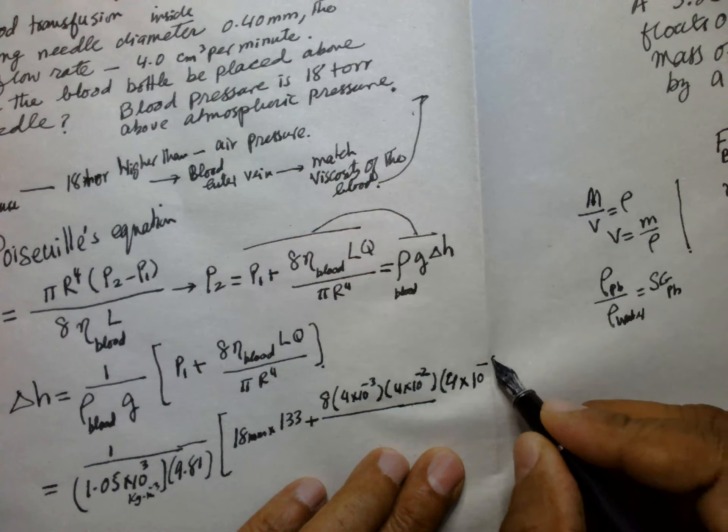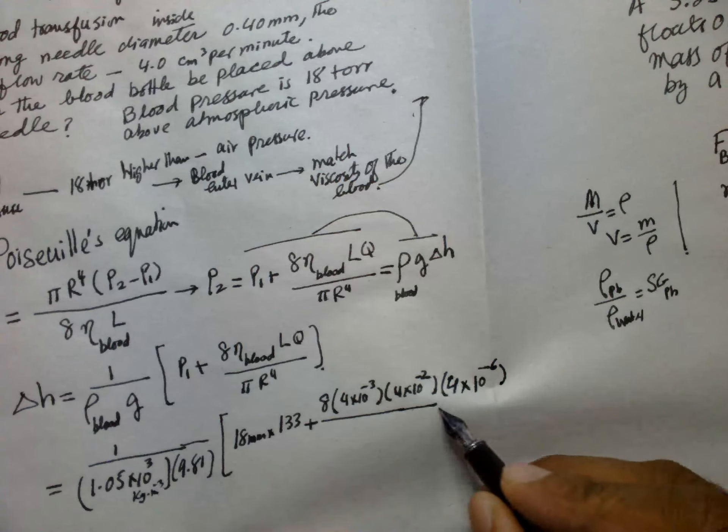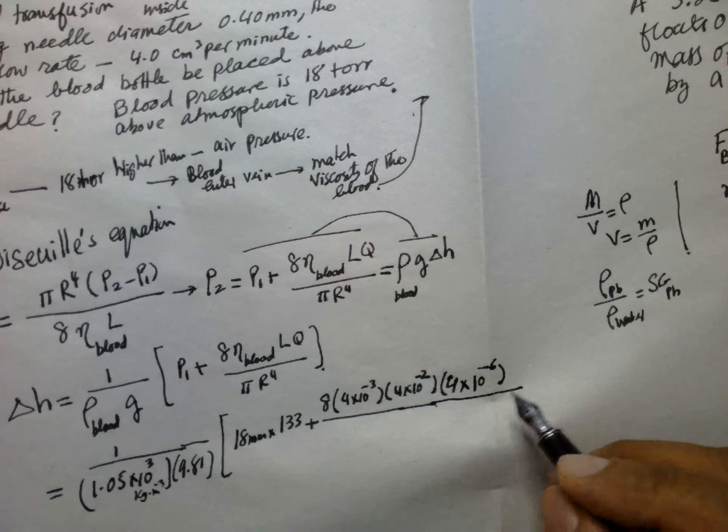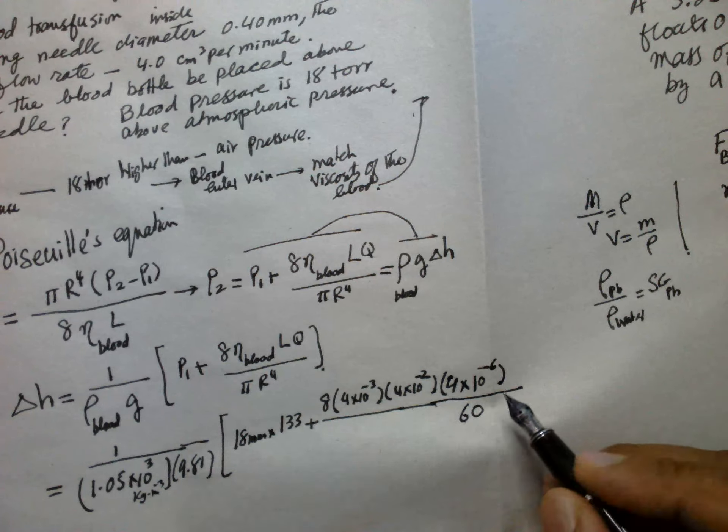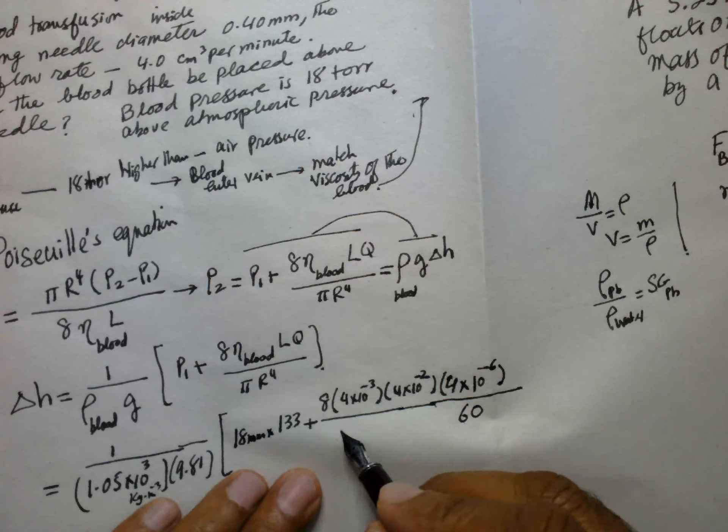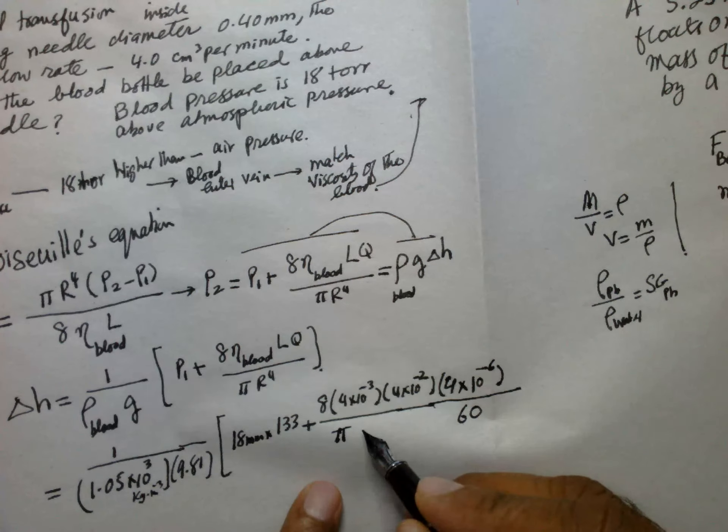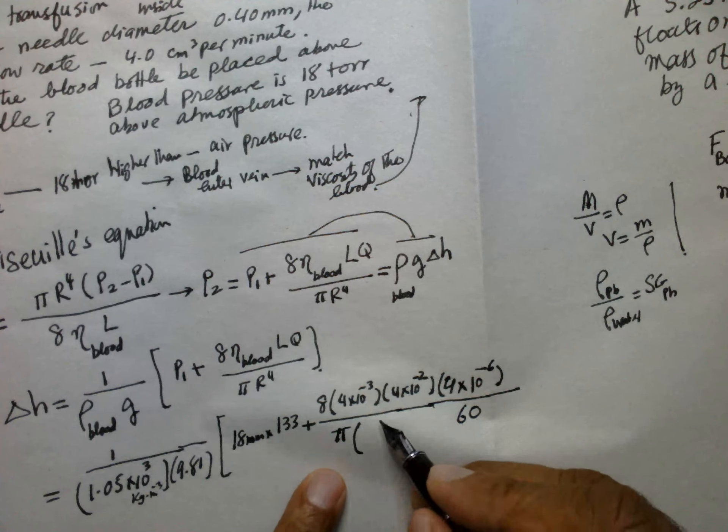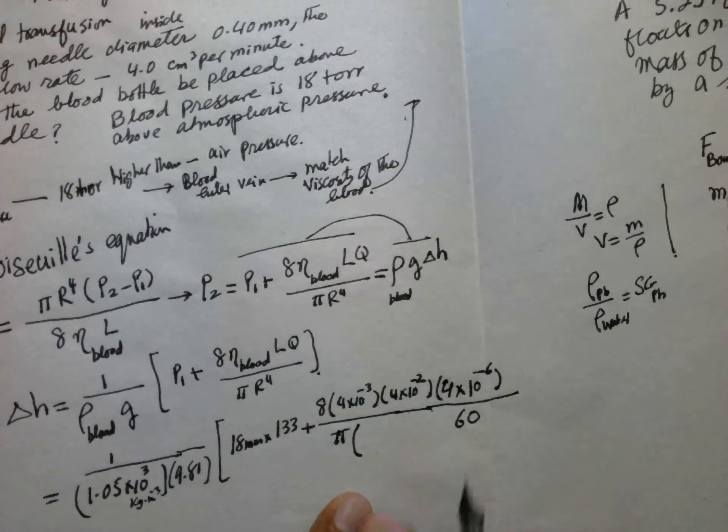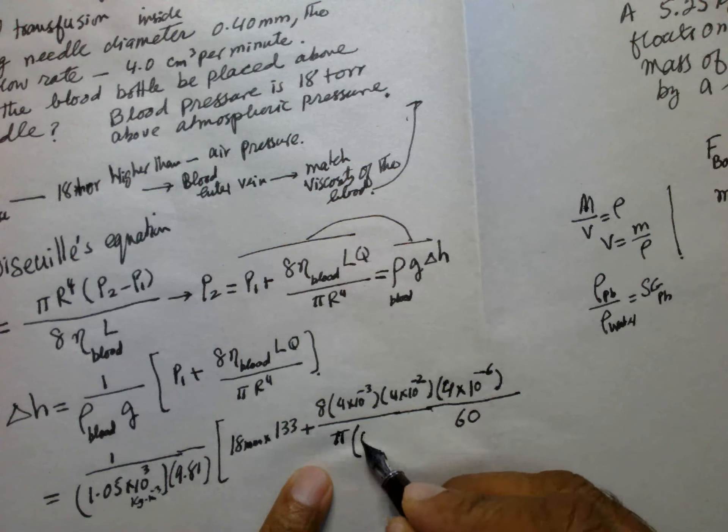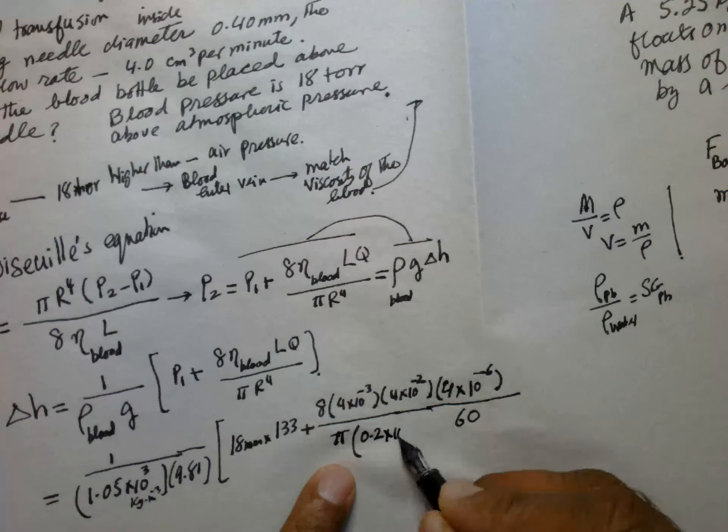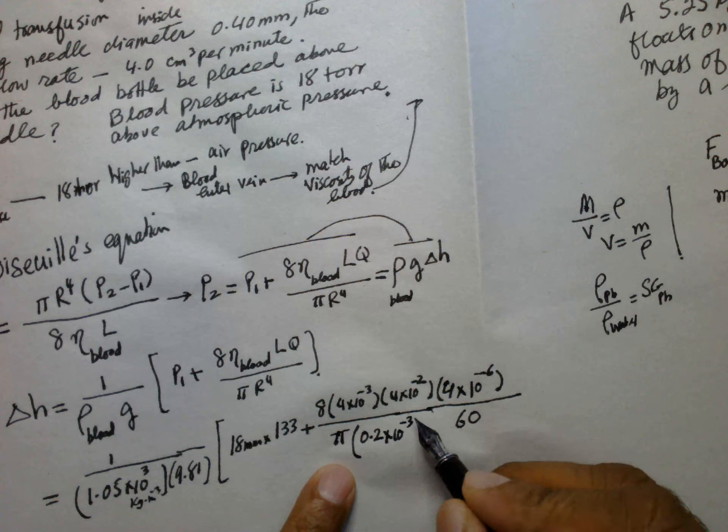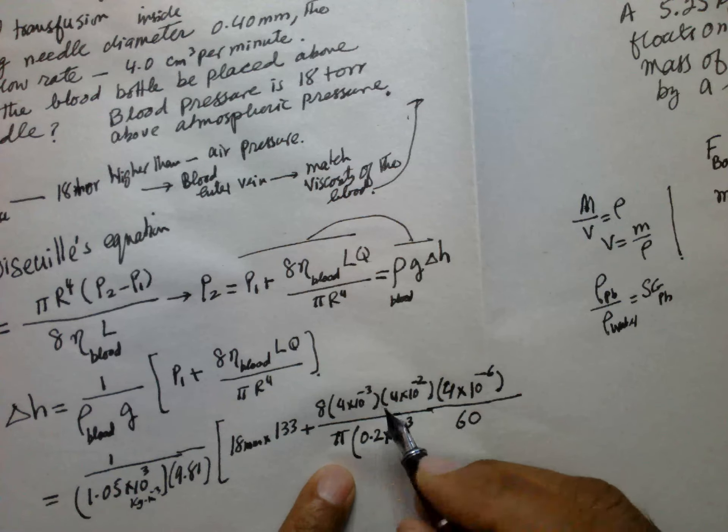divided by π times r⁴. R is 0.2 mm which is 0.2 × 10⁻³ raised to power 4.